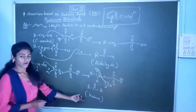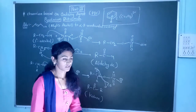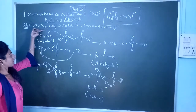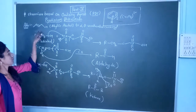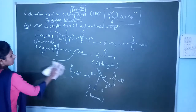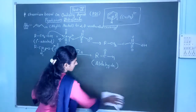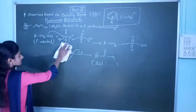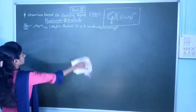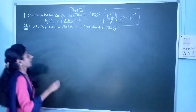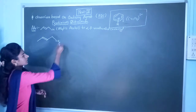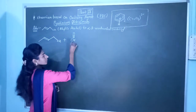From secondary alcohol we can obtain a ketone molecule as a product. There is one important advantage of PDC reagent: we can obtain an alpha-beta unsaturated carbonyl compound from allylic alcohol. This is our allylic alcohol, and it is treated with PDC reagent.